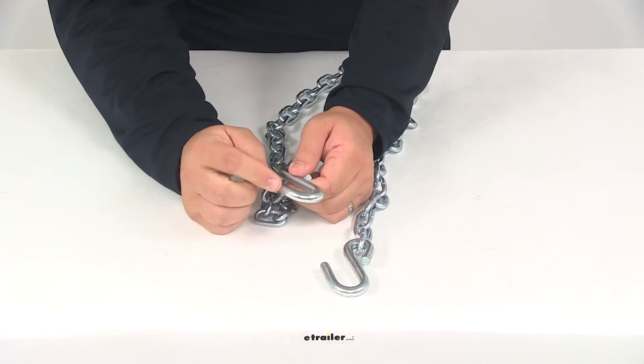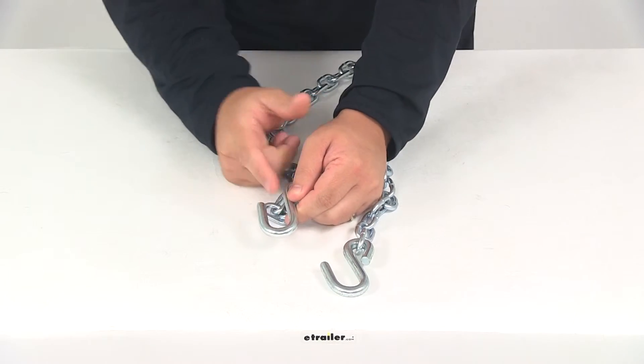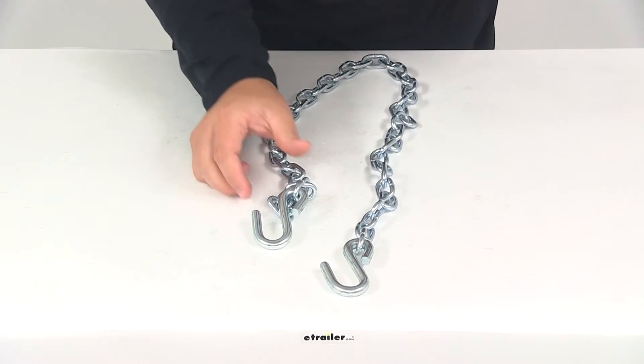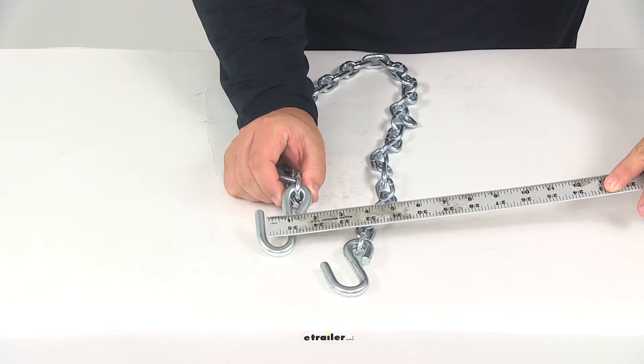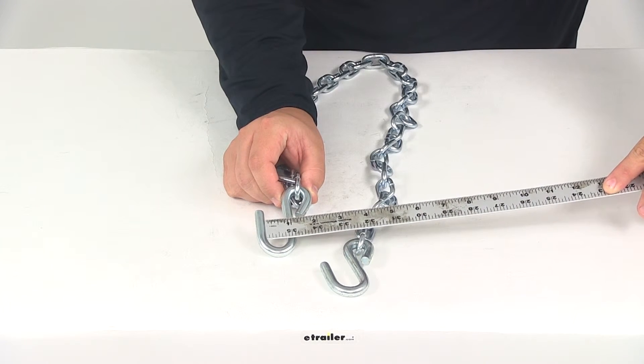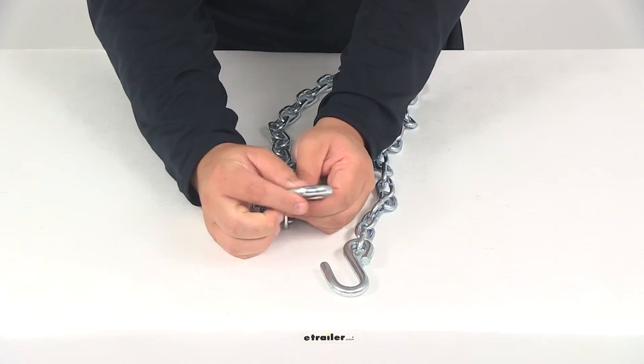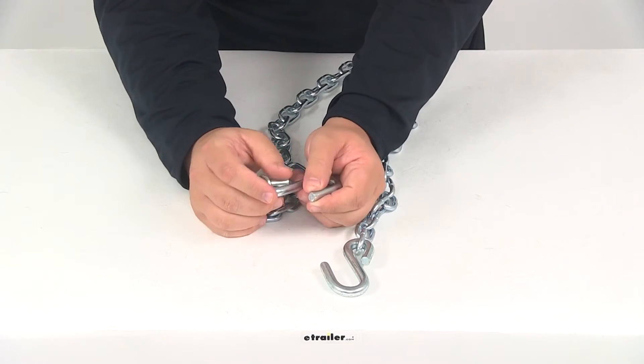When it comes to the loop right here, the opening size is going to give us an opening of about three quarters of an inch, and the diameter of our hooks measures three eighths of an inch.